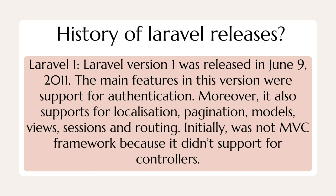History of Laravel releases. Laravel version 1 was released on June 9, 2011. The main features in this version were support for authentication. Moreover, it also supports localization, pagination, models, views, sessions, and routing.